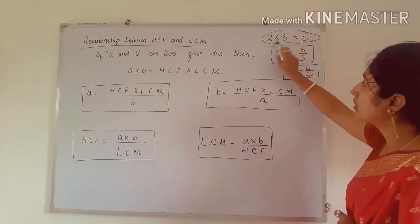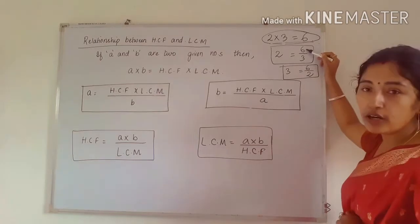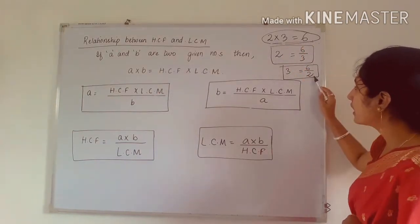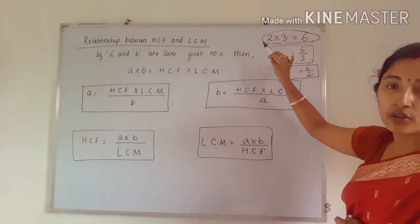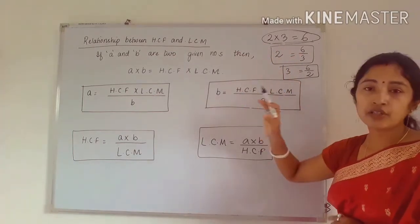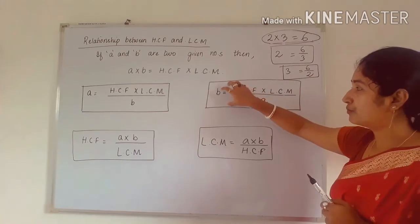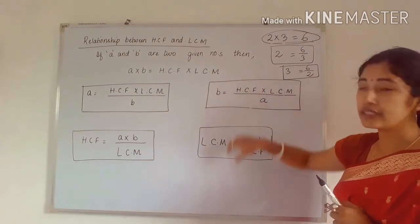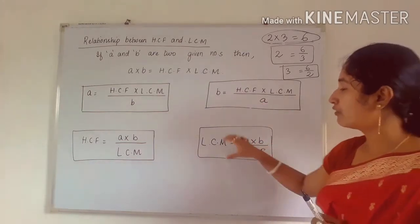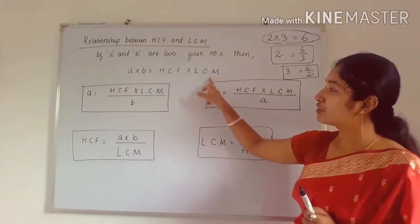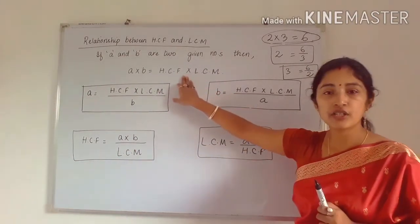When there is multiplication on one side, transferring a number to the other side means it gets divided. I hope you understood this. Just try to remember these things — this makes the formula easier. You don't have to memorize all four formulas separately; if you know the expression A × B = HCF × LCM, you can form all four formulas from it.